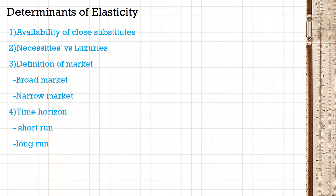The second determinant is necessities versus luxury. Elasticity varies depending on whether the commodity is a necessity or a luxury. Luxury commodities have an elastic demand curve — for example, luxury cars, Porsche, BMW, personal jets, or expensive technology. But for necessity goods like eggs, water, bread, and petrol, the demand curve would be inelastic, as a change in price will not affect quantity demanded a lot.